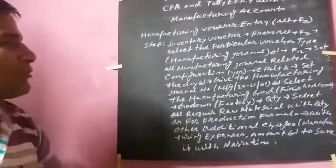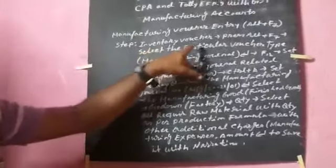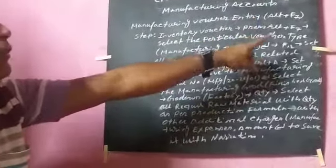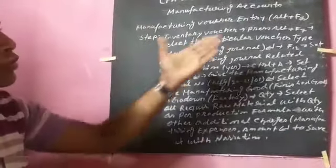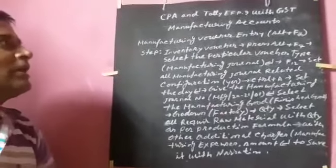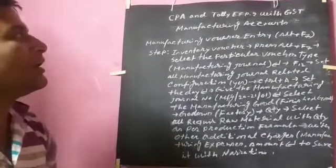First of all, you have to select inventory vouchers then present. Then press Alt plus F7. This is the manufacturing journal.